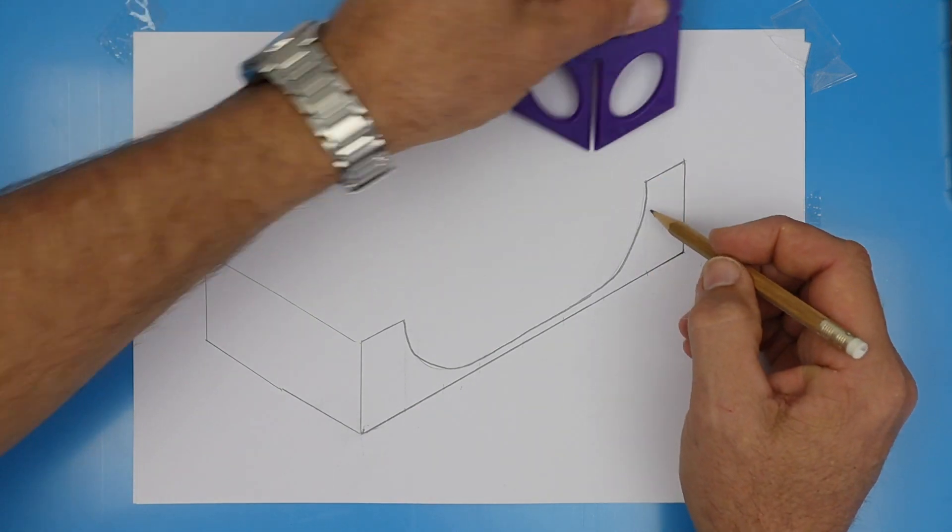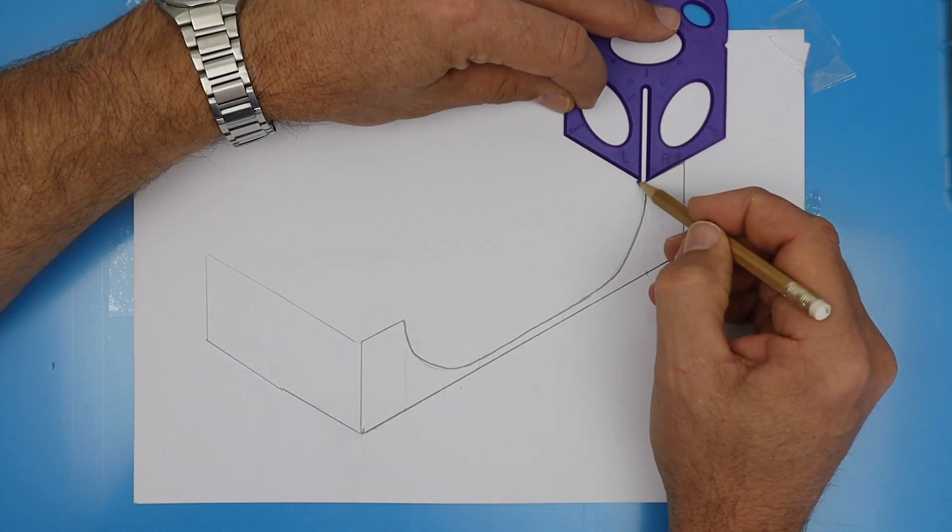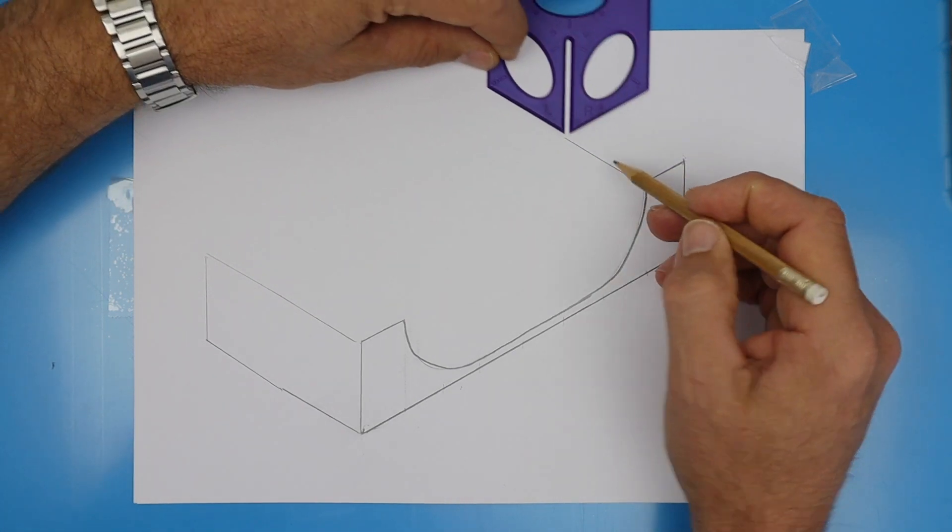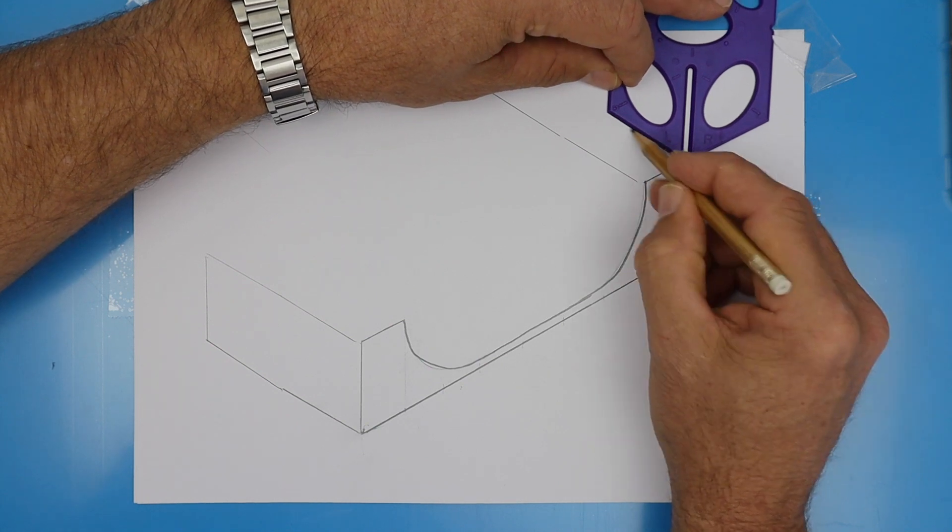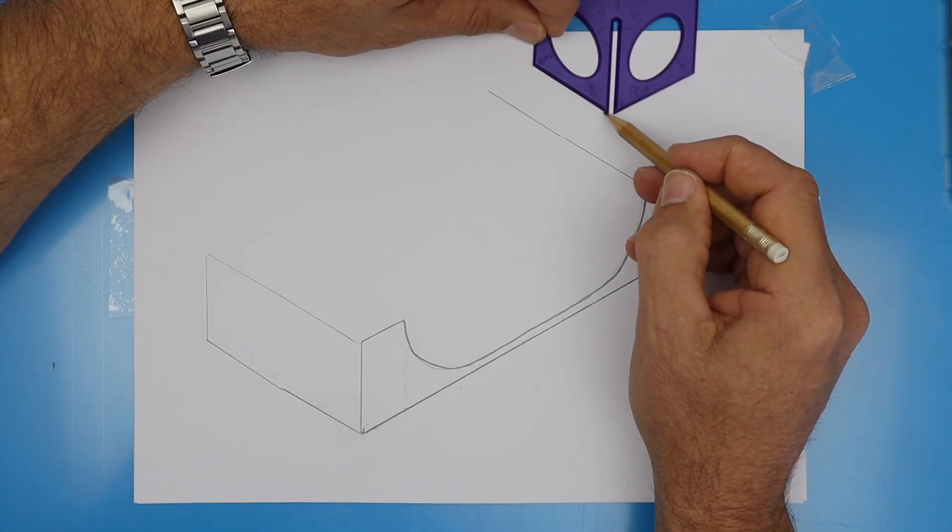Now use the edge of the splat to draw a vertical line and join those two points together. Watch as I do the same thing from those two points at the back, one, two. Don't worry if your lines don't join up, they're a little wobbly because when we finish the drawing, we can come back over it and darken it in.